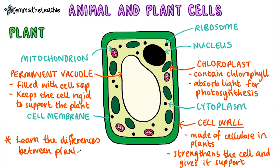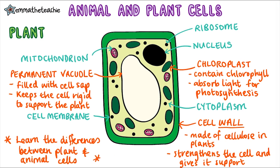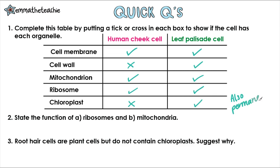It's vital that you learn the differences between plant and animal cells. Now it's time for some quick questions — pause the video and try these before pressing play to go through the answers. Number one: complete this table by putting a tick or cross to show if the cell has each organelle, for a human cheek cell (animal cell) and a leaf palisade cell (plant cell). They both have a cell membrane; only the plant cell has a cell wall; they both have mitochondria and ribosomes; only the plant cell has a chloroplast. You could also have had a row about a permanent vacuole, and that would also just be for the leaf palisade cell.